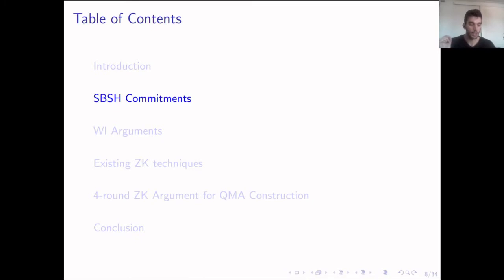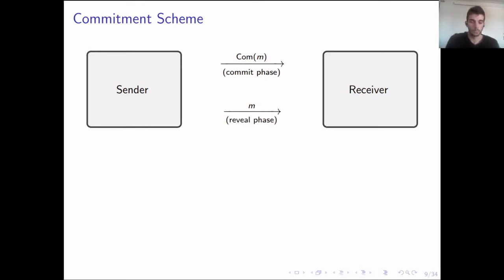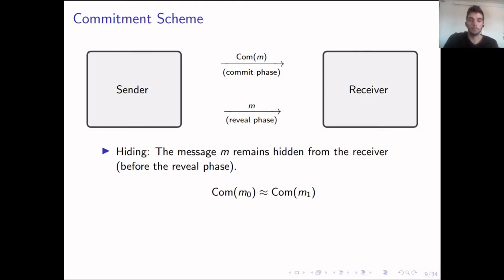Before getting into constructions, I want to define SBSH commitments, a tool we use a lot in this paper. In a commitment scheme, we have a sender and a receiver. The sender commits to a specific value M in the commit phase, which he can later reveal to the receiver. We want the commitment scheme to be hiding, meaning the message M remains hidden from the receiver during the commit phase — commitments to two different messages are indistinguishable.